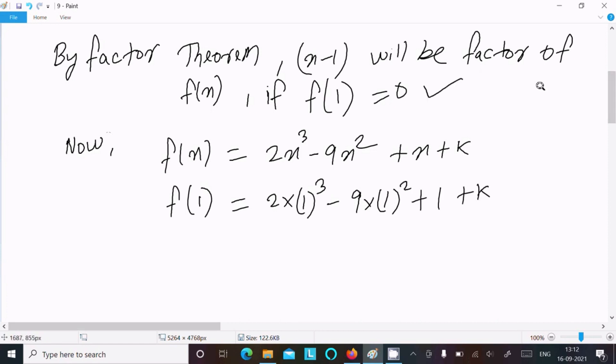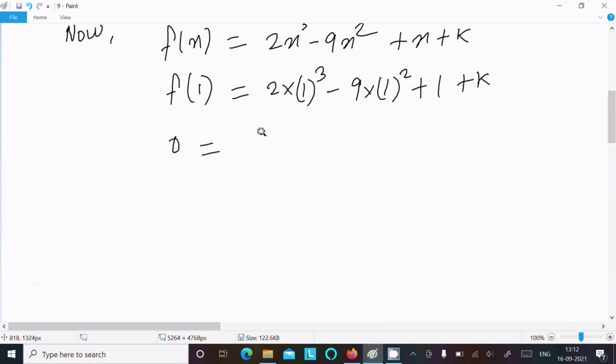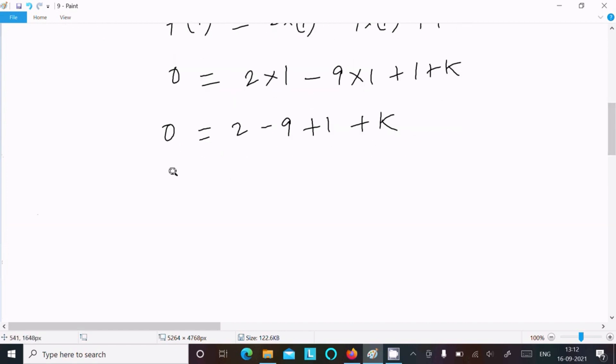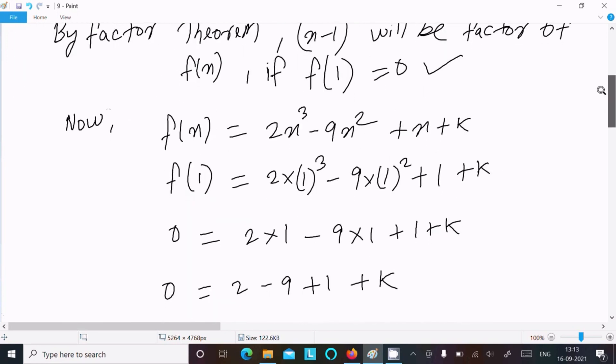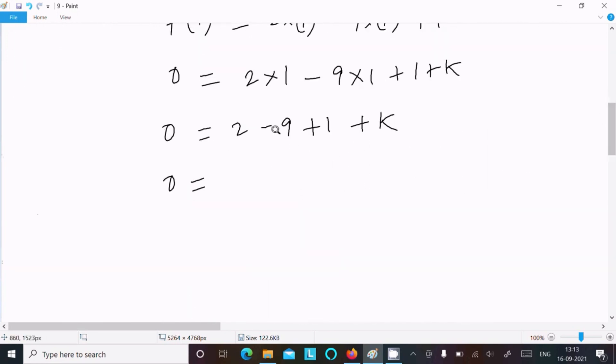And here f(1) value is 0. 0 equals 2 into 1 power cube, 1 minus 9 into 1 square plus 1 plus k. This here 2 minus 9 plus 1 plus k, so this here 0. F(1) value is 0.